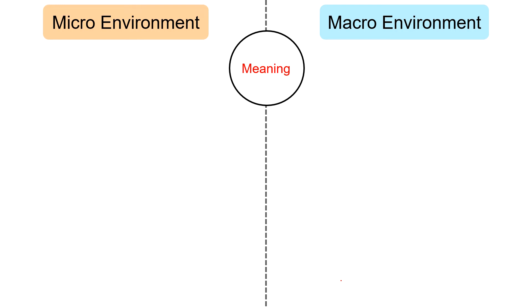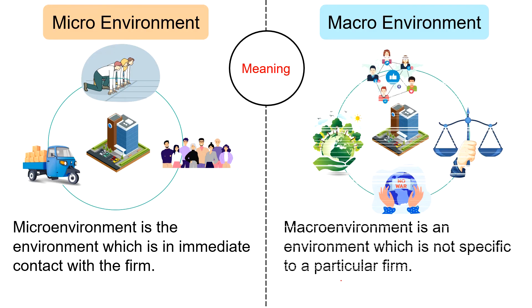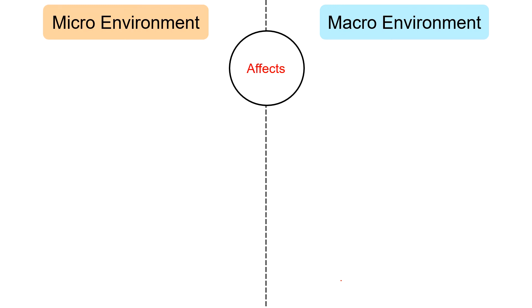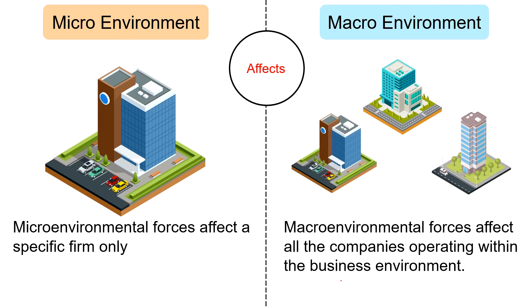Talking about the differences between micro environment and macro environment: Micro environment is the environment which is in immediate contact with the firm — the forces operating in the market are close to or within the enterprise and can affect its ability to serve the customers directly. On the other hand, macro environment is not specific to a particular firm — it influences all the firms operating in the industry and consists of all the forces which are part of a larger environment. Micro environmental forces affect the specific firm only, whereas macro environmental forces affect all the companies operating within the business environment.